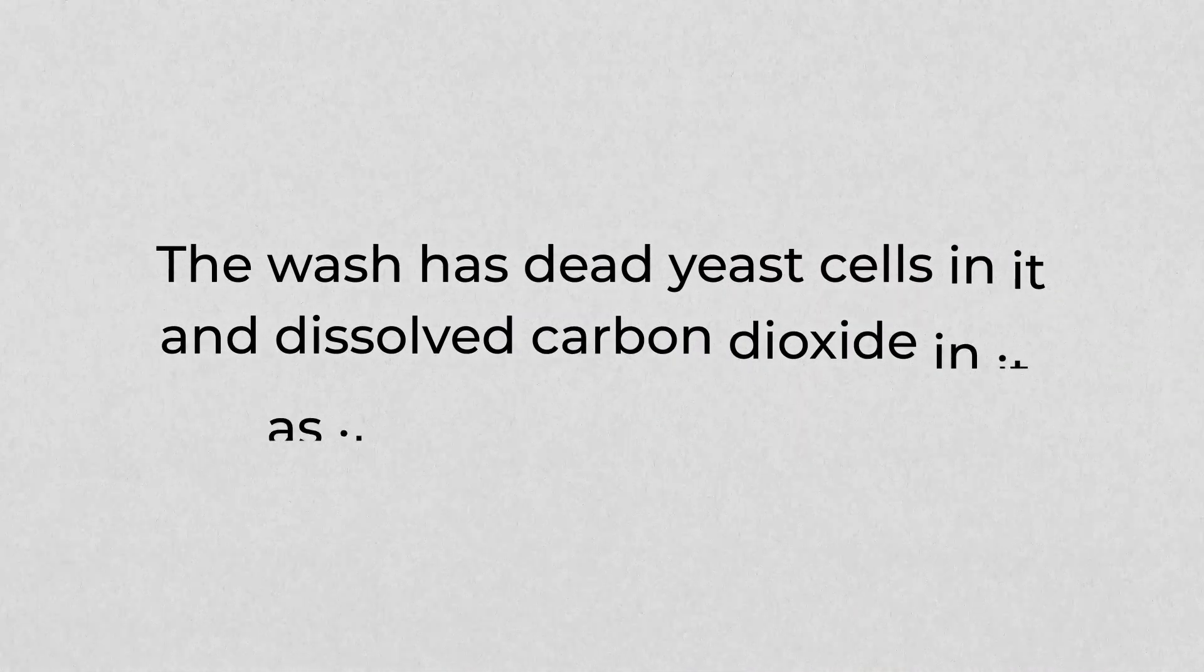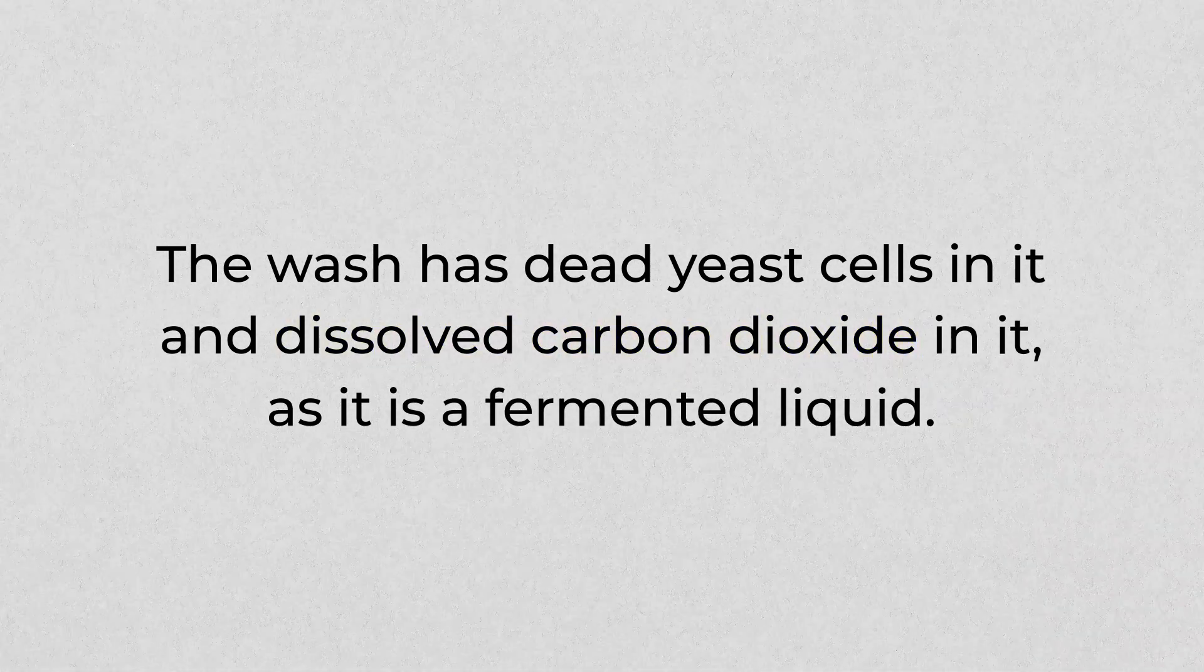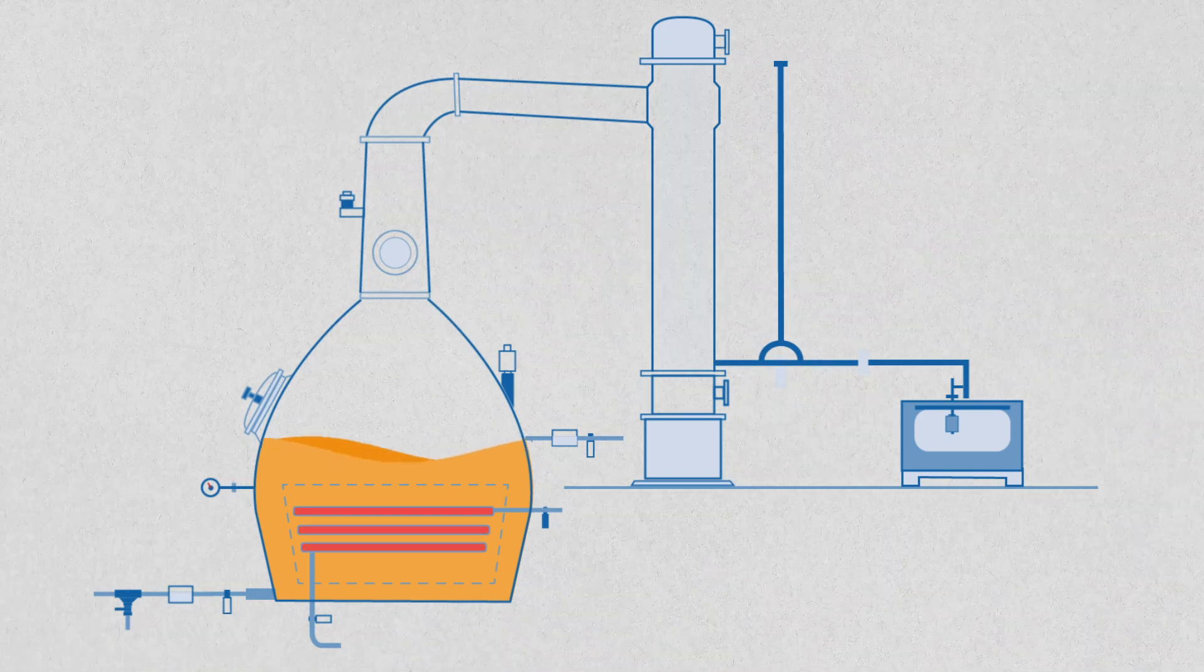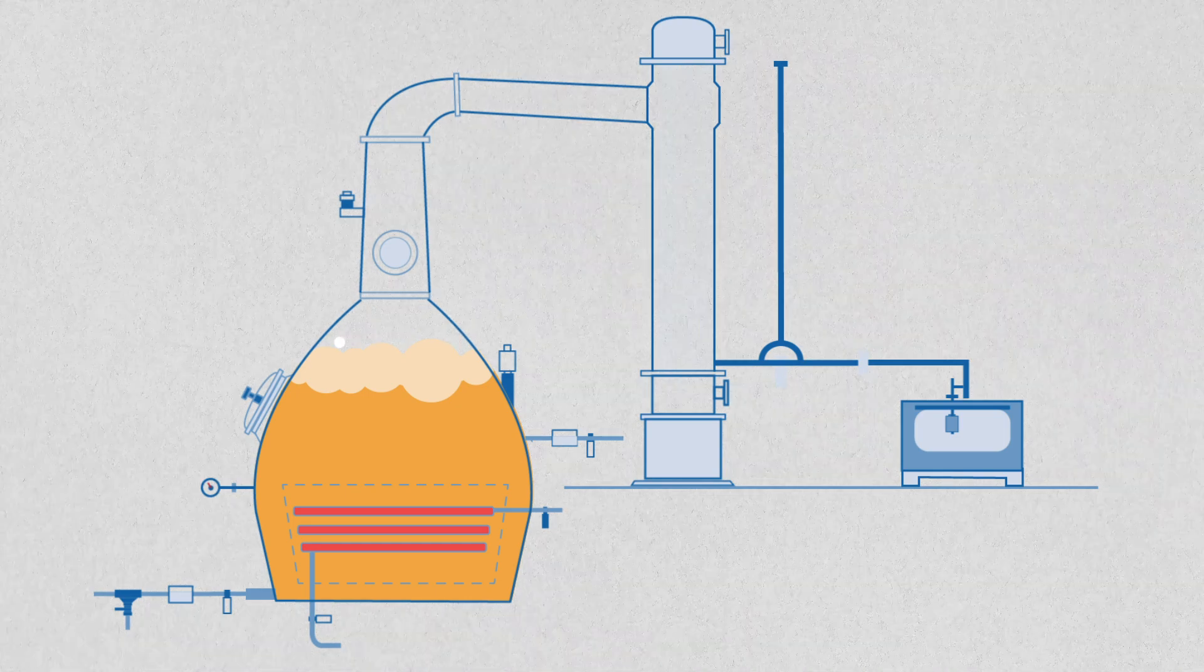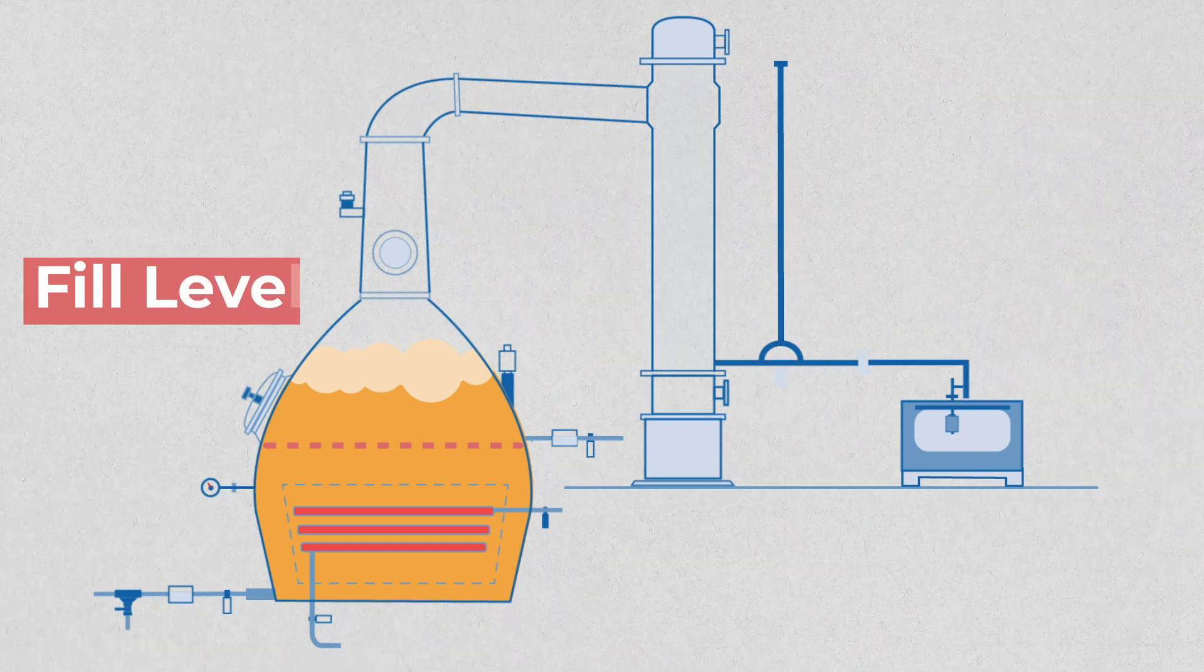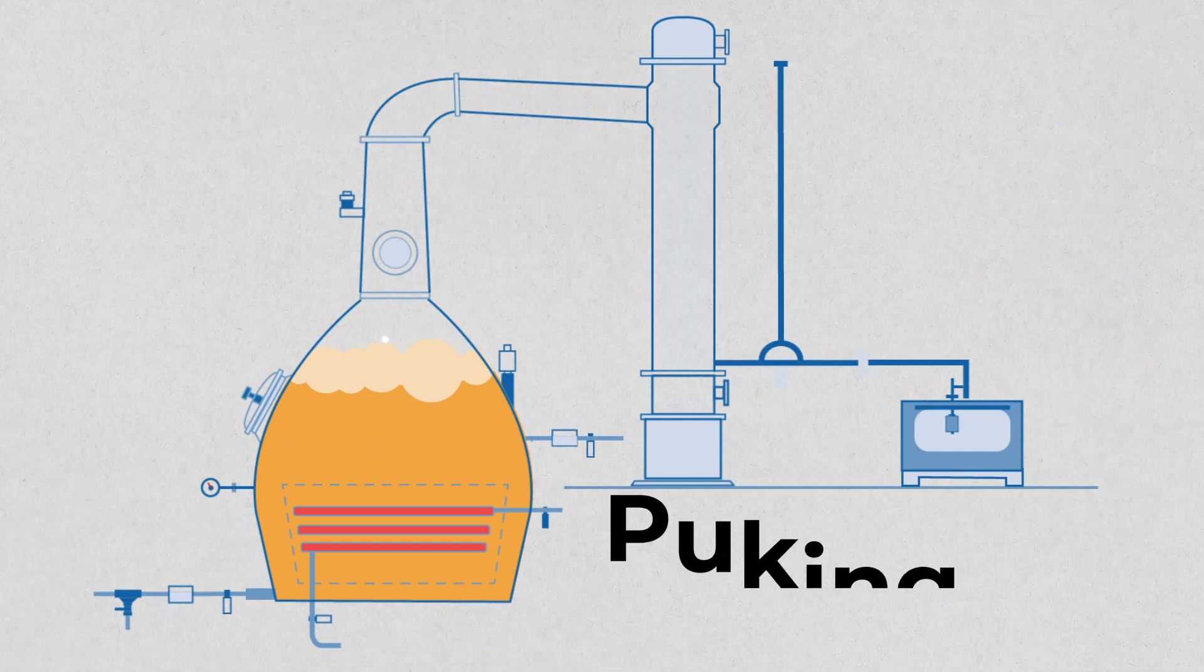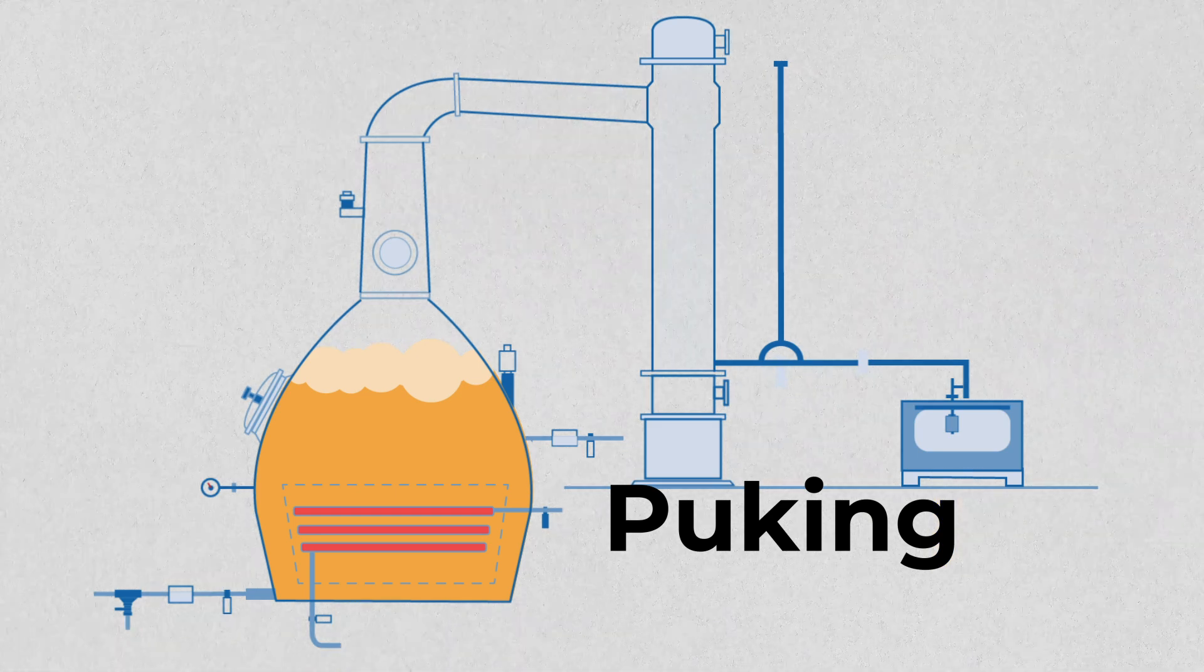The wash has dead yeast cells in it and dissolved carbon dioxide in it as it is a fermented liquid. When we're initially heating the wash up, it's prone to excessive foaming. If we didn't have the sight glass in the still, then what could happen is the wash could go up past the head and we might collect it in our distillate. This is called puking and results in solids and the wash ending up in our spirit, which we definitely do not want.